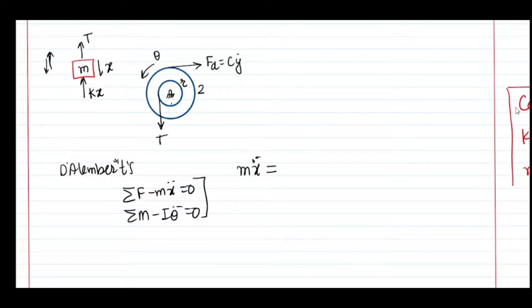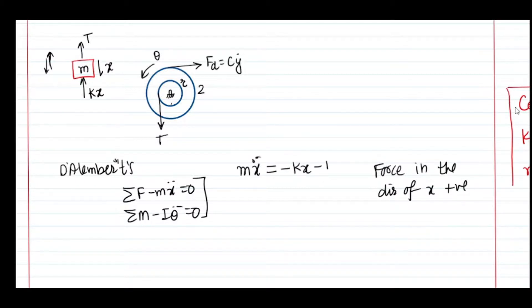Other forces go on the right-hand side. If the direction of a force is in the direction of motion it is positive; otherwise negative. In this case both T and kx act upward, opposite to the direction of x, so I write minus kx minus T on the right-hand side. This is not a generalized statement but a useful style for writing the equation of motion of a vibratory system.